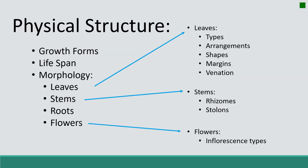When we say physical structures, this ties back to the lecture on morphology of different plant characteristics. We want to look at growth forms — meaning grass, grass-like, shrubs, or forbs. We also look at lifespan: is this an annual, a perennial, or a biennial? And we look at morphological characteristics including leaves, stems, roots, and flowers. These are examples you've learned in this class that you should be familiar with.